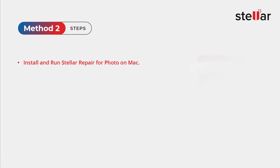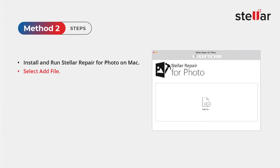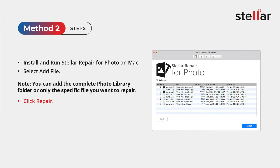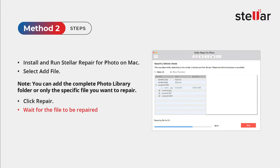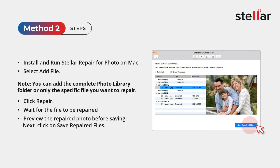Step 1: Install and run Stellar Repair for Photo software on Mac. Step 2: Select Add File. Note that you can add the complete photo library folder or only the specific file you want to repair. Step 3: Click Repair to repair the corrupt photos and wait for the files to be repaired. Step 4: Preview the repaired photo before saving, then click Save Repaired Files to save the corrupt photos.